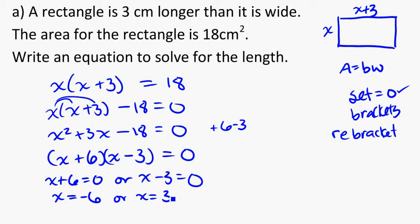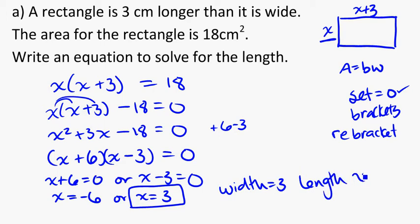And which one actually makes sense? We're talking about the length of something or the width of something here, so it does not make sense to have a negative measurement. So we're going to consider that x is equal to 3 is the measurement for x. So if we know our width is equal to 3, the length then is going to be x plus 3, so 3 plus 3 equals 6. And it's in centimeters, so 6 centimeters.